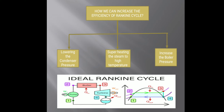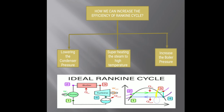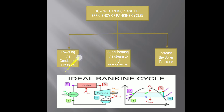In the TS diagram, this area shows the turbine work after expansion. To increase turbine work, one method is lowering the condenser pressure. When this line goes down, the expansion line increases, which means an increase in turbine work.